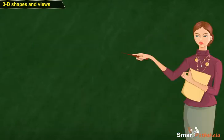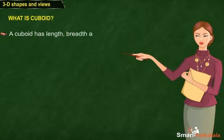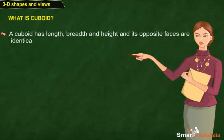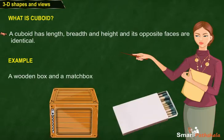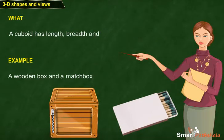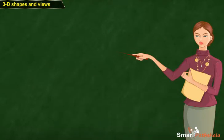Now, the question arises in our mind: What is a cuboid? A cuboid has length, breadth and height and its opposite faces are identical. Examples include a wooden box and a matchbox.